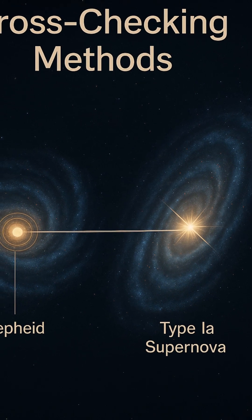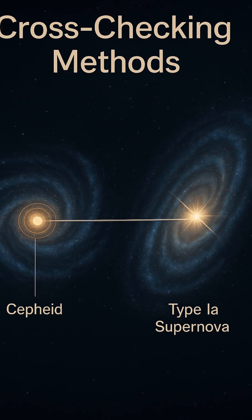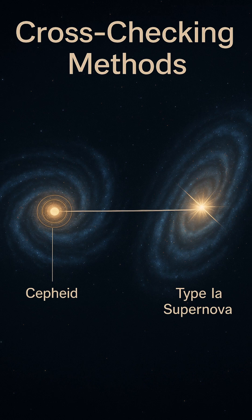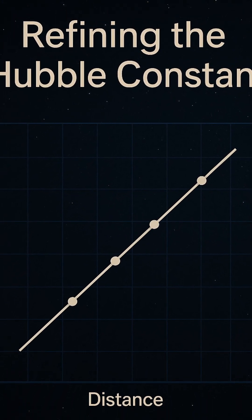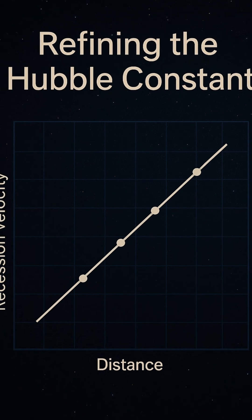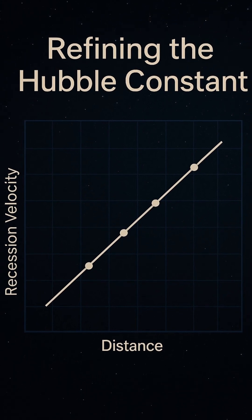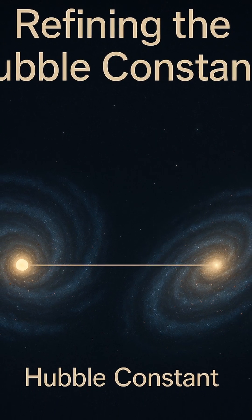Reducing this uncertainty is vital not just for precision, but for fundamental understanding. Calibrating cosmic distances helps us determine the universe's age, composition, and fate. Each refinement sharpens our view of cosmic history, from the first stars to galaxies billions of years away.